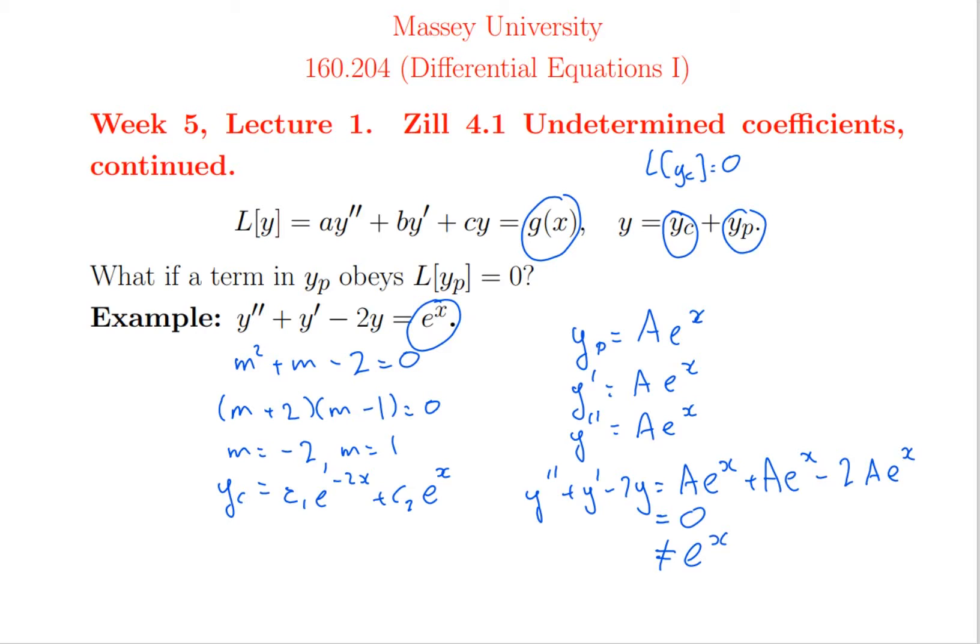The solution is the same as what happened with a repeated root: multiply the candidate solution by x. So we try yp = ax·e^x. It is possible to prove in all the cases we've done that this method will work, but we'll just examine it through examples.